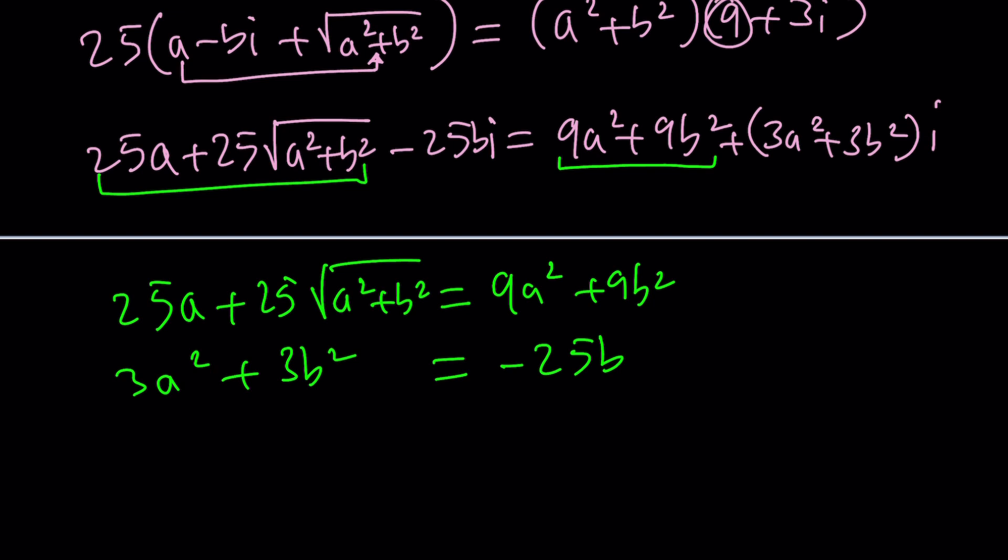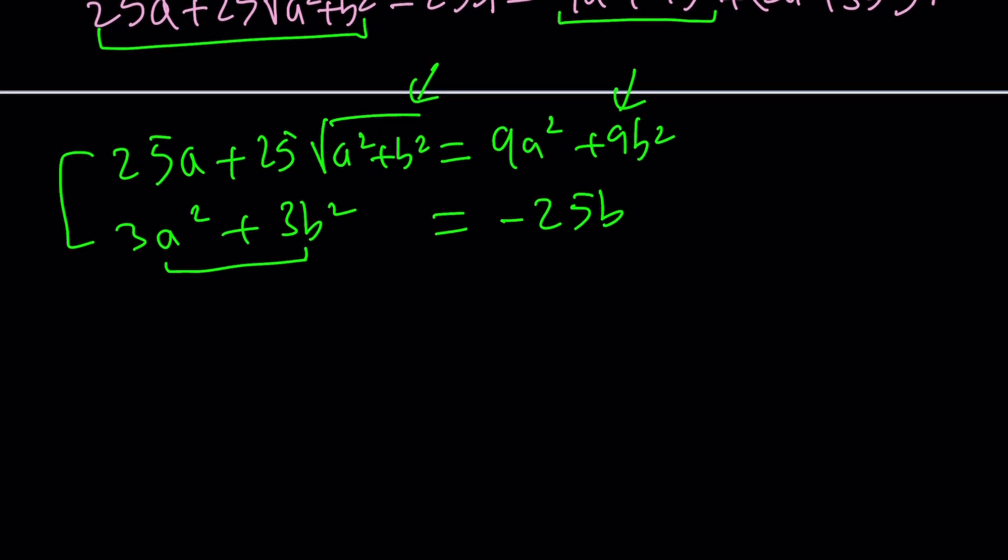Now here's one thing that might make things a little easier. From here you can solve for A squared plus B squared and plug it in here. That'll give you a relationship between A and B. So let's go ahead and give it a try. I'm going to isolate A squared plus B squared from here. That's going to be negative 25B divided by 3. Even though we have A's and B's on both sides it's not bad because we can directly plug it in here and here.